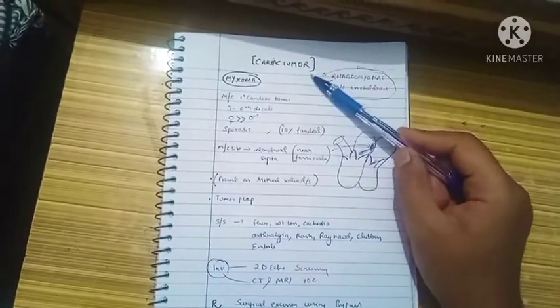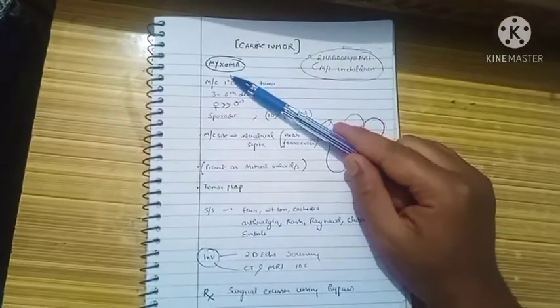In this video we are going to talk about cardiac tumors, and the most common cardiac tumor is myxoma.